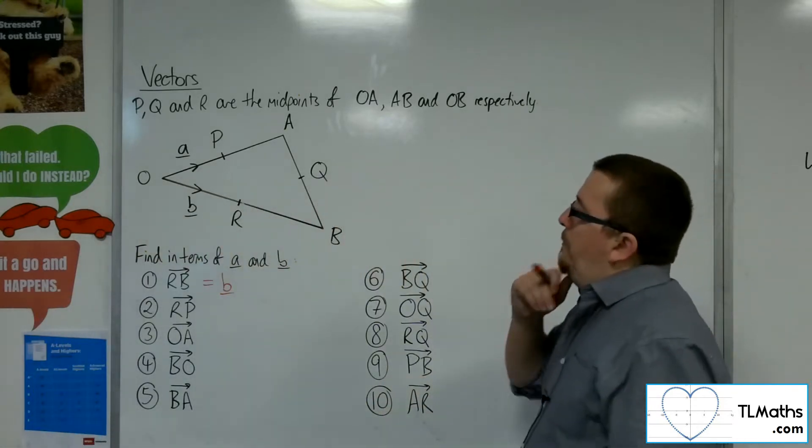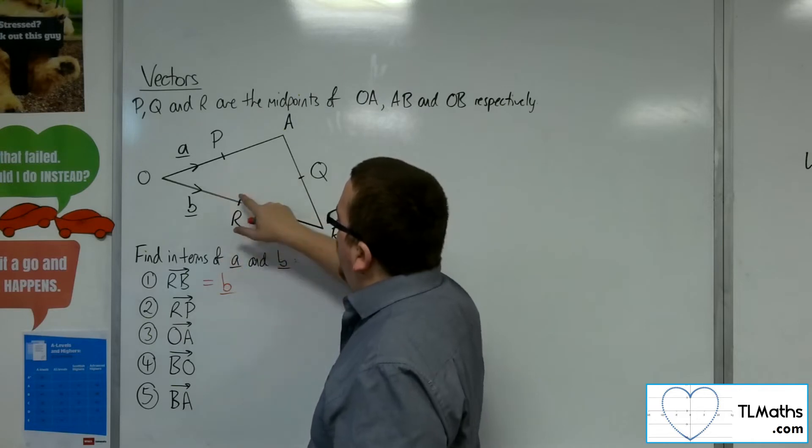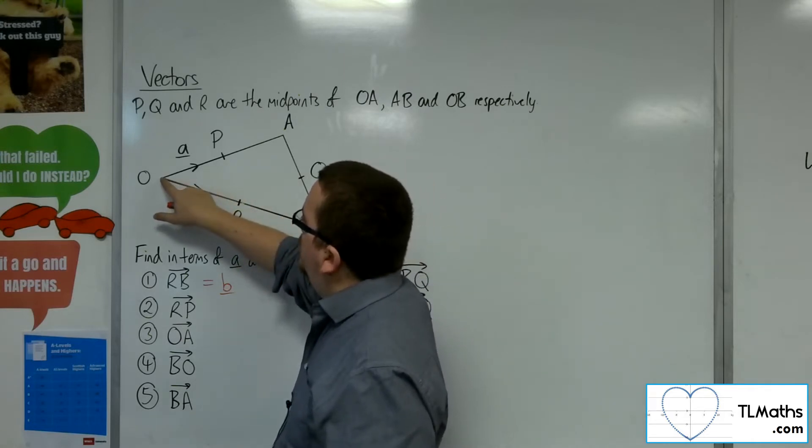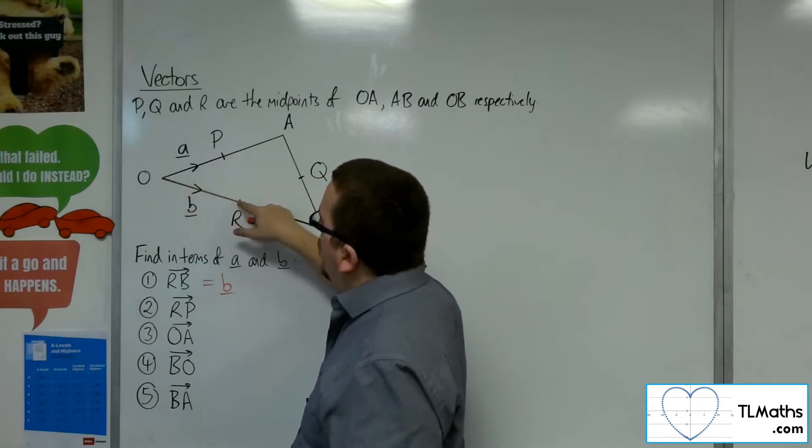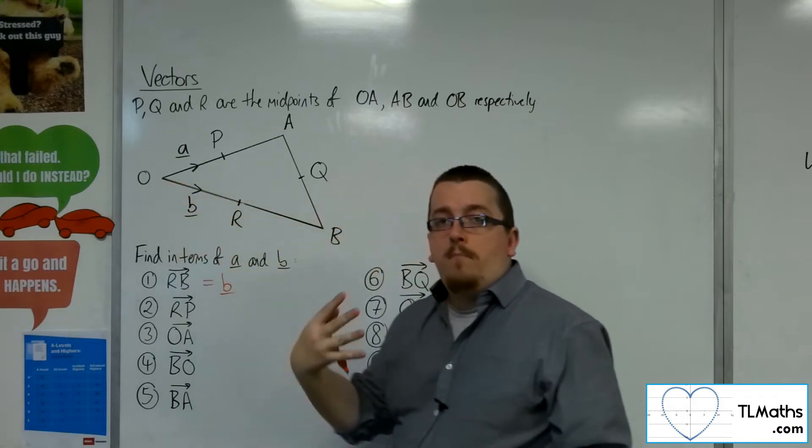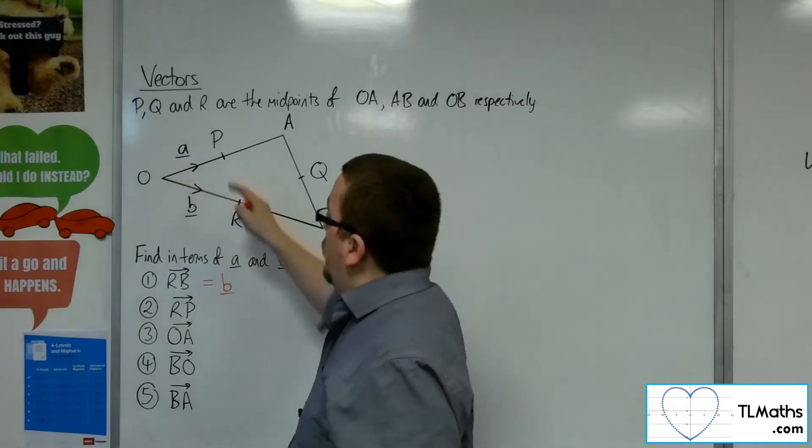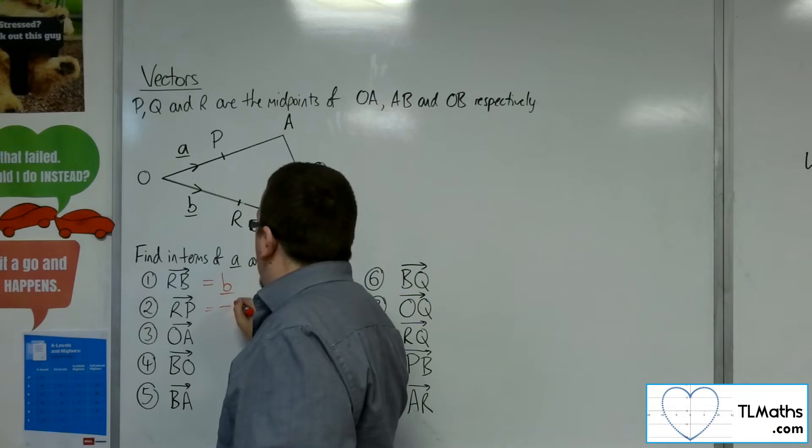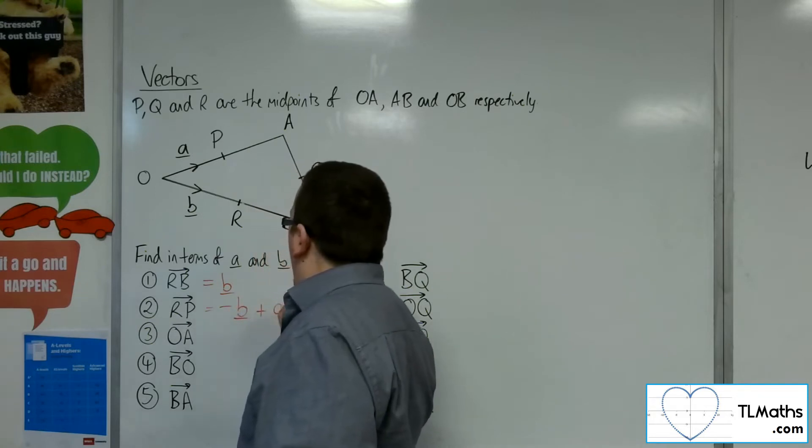How about R to P? Well, to get from R to P, I'd have to go back along that vector and then along that vector. So going back along B would be minus B, and then I've got to add on A. So that would be minus B plus A.